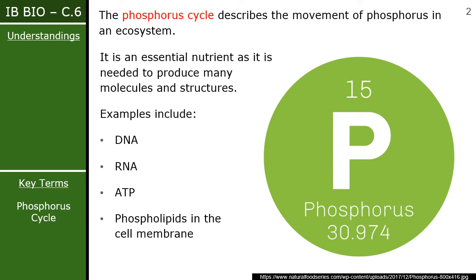The phosphorus cycle describes the movement of phosphorus in an ecosystem. It is a very essential nutrient required for many molecules. Our DNA and RNA has a phosphate sugar backbone, which means you need phosphorus there. ATP — adenosine triphosphate — has three phosphate groups right in the name itself. Phospholipids in our cell membrane also incorporate phosphorus molecules as part of that structure.